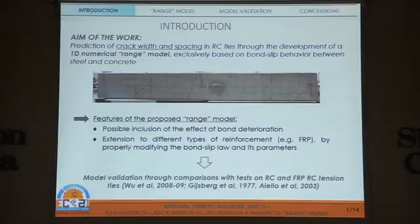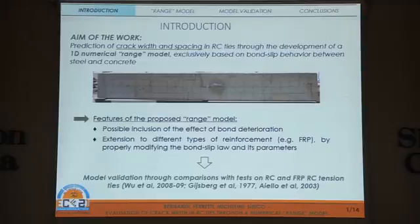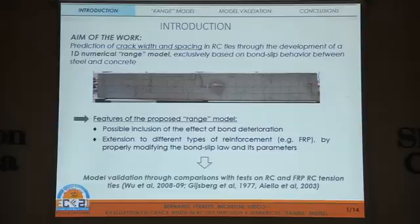A 1D numerical model exclusively based on bond slip behaviour between steel and concrete and the plain section hypothesis has been developed. The main features of this model are the possibility to include the effect of bond deterioration near transverse cracks, as well as the possibility to be easily extended to different types of reinforcement other than classical metallic ones — for example, FRP reinforcement — by simply modifying the bond slip law and its parameters. The proposed model has been validated through comparison with significant experimental tests taken from literature.